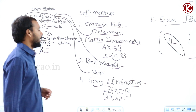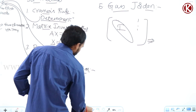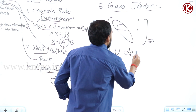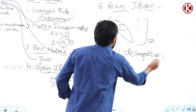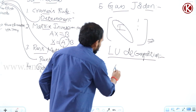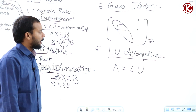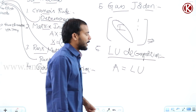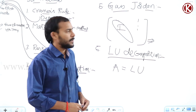The next solution method is the LU decomposition method. In this method, we decompose a given matrix into a product of a lower triangular matrix and an upper triangular matrix. We will see this method in detail while covering the different solution methods.